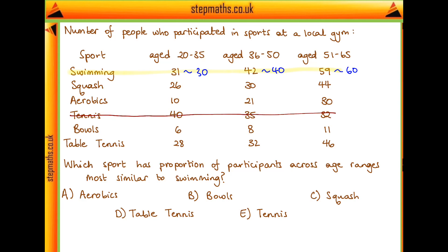For aerobics, we've got about three times as many people in the oldest age range compared to the youngest one. And the youngest age range is only about half that for the middle, where it should be about three quarters. So aerobics is also quite a lot out.